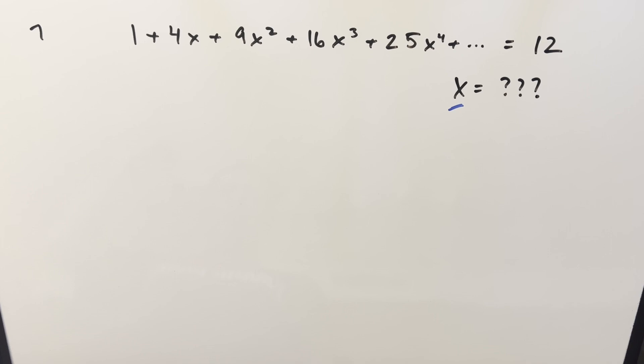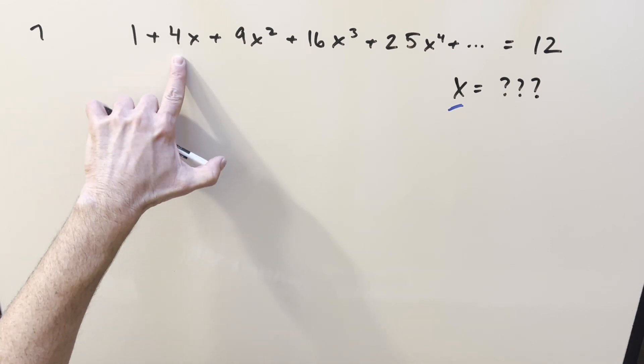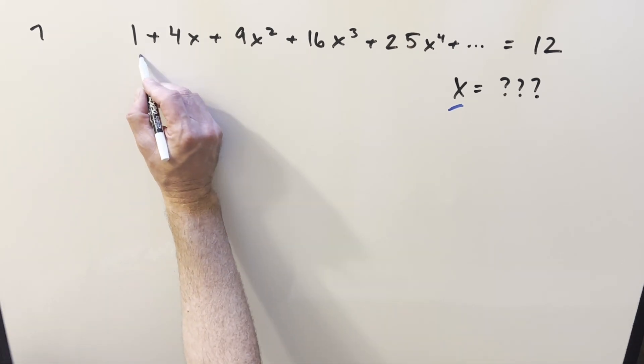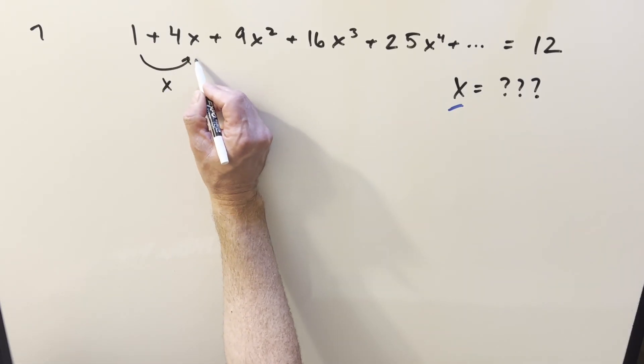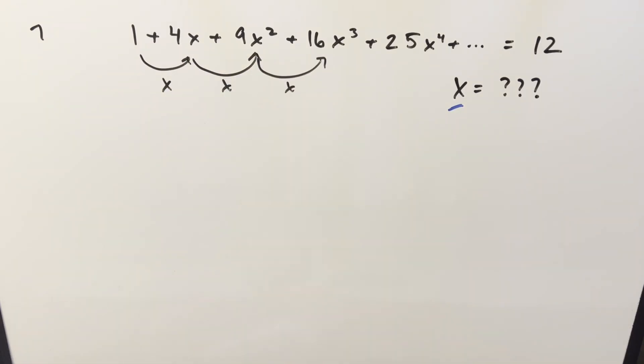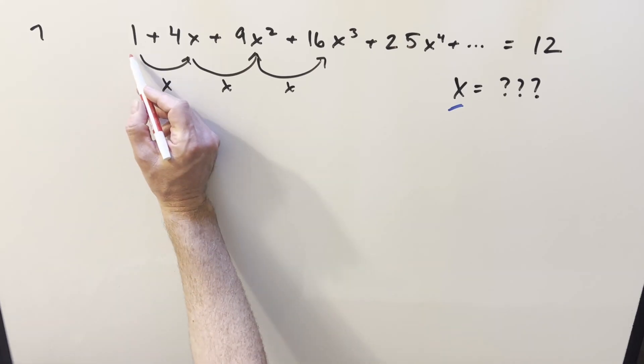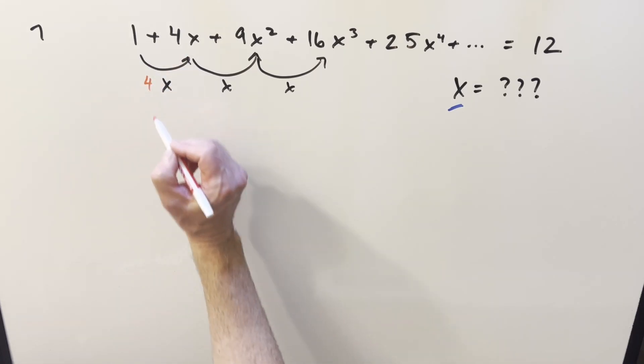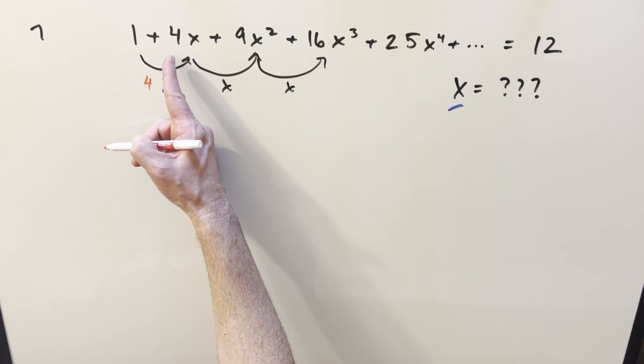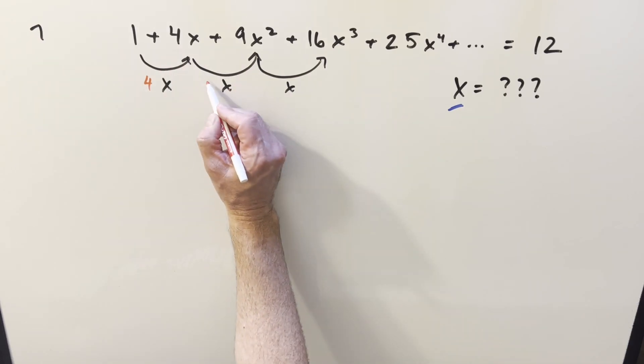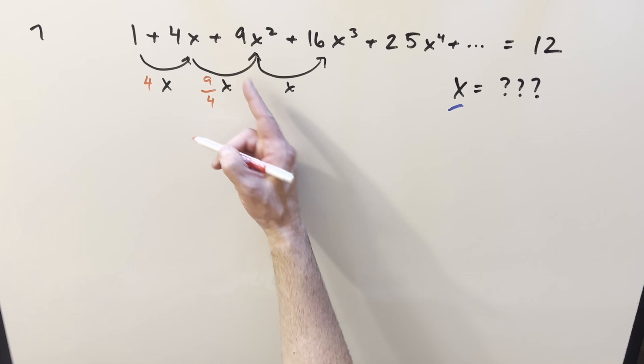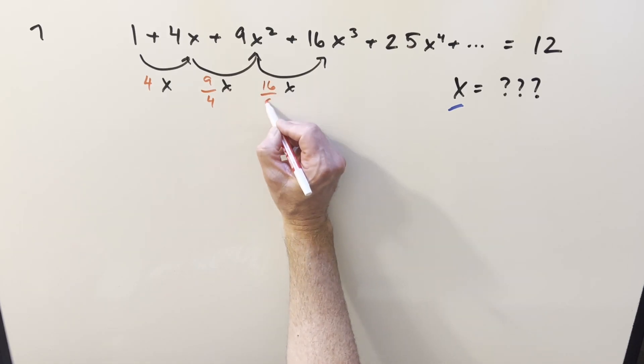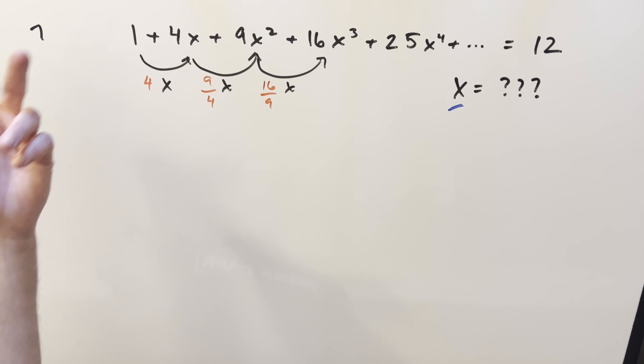The first thing I thought about was this is very similar to a geometric series. If we forget about the coefficients for a second, it's just like our ratio - we're multiplying by x to go between each term, but it's actually not consistent because to go from 1 to 4x, we're actually multiplying by 4x. And then to go from 4x to 9x squared, we're multiplying by 9 over 4x. And then for this one, we're multiplying by 16 over 9x. So the way we have it here is actually not quite a geometric series.